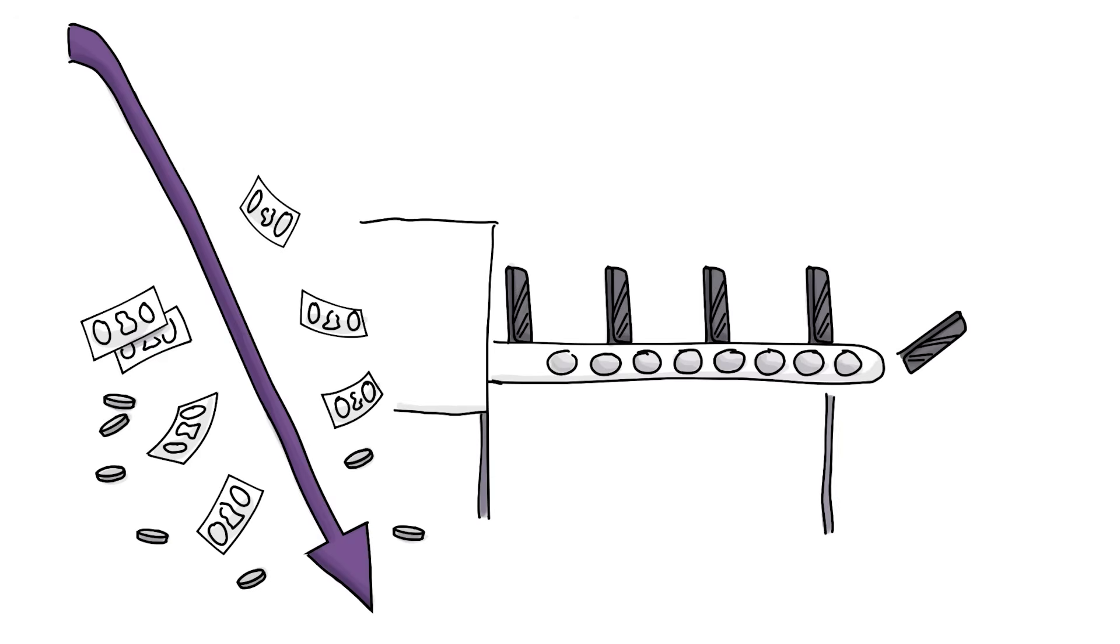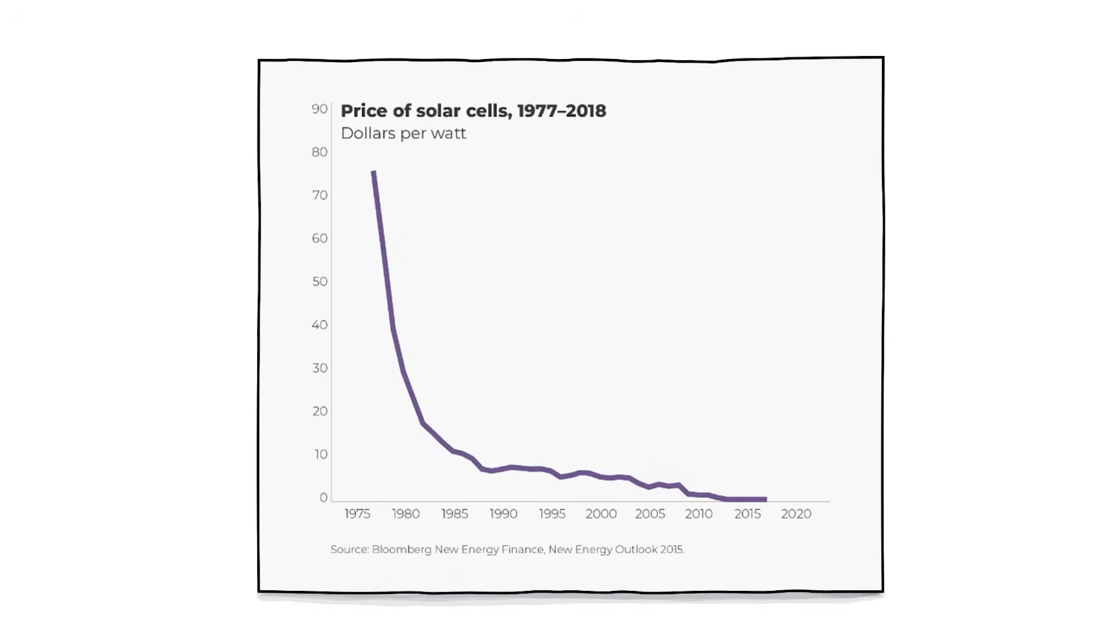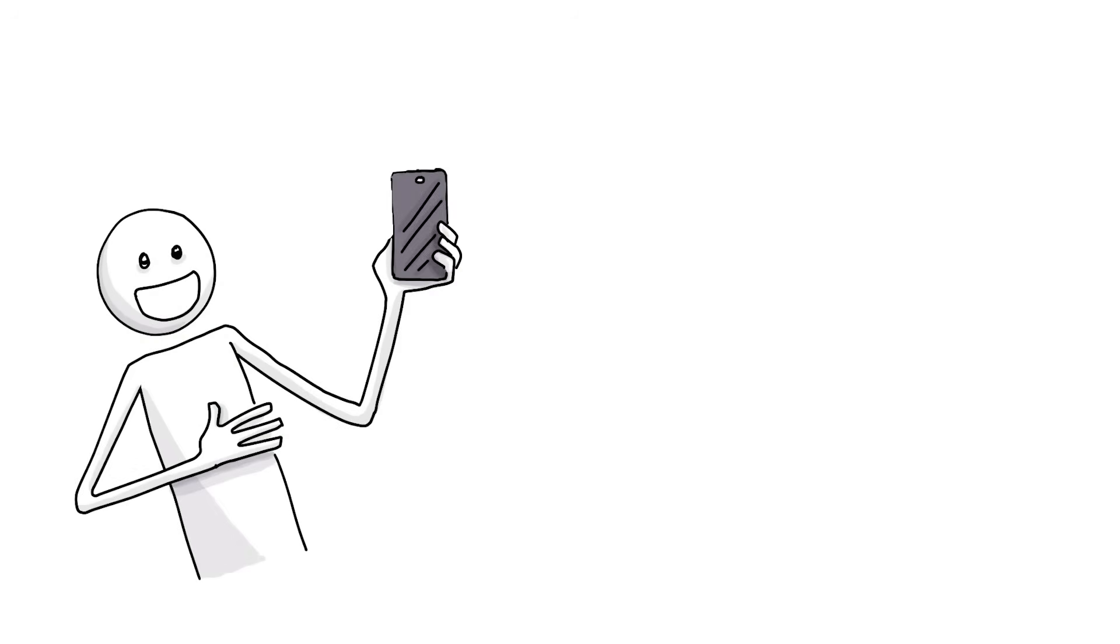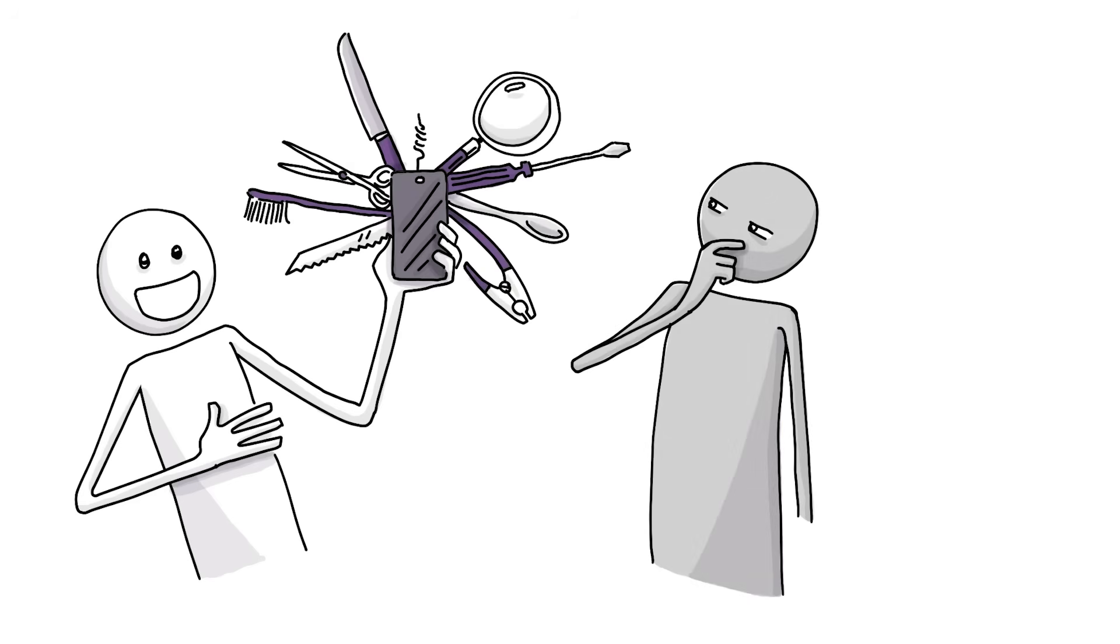And once the price drops, which usually happens when production ramps up, see solar cells, more people jump on board. Although Rogers himself once noted, getting a new idea adopted, even when it has obvious advantages, is often very difficult.